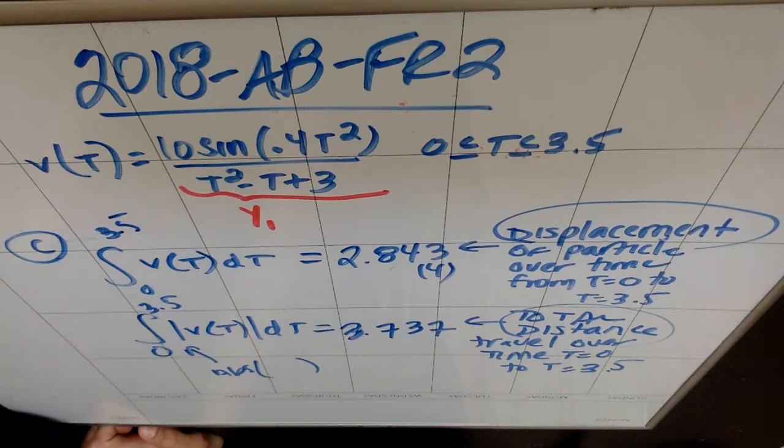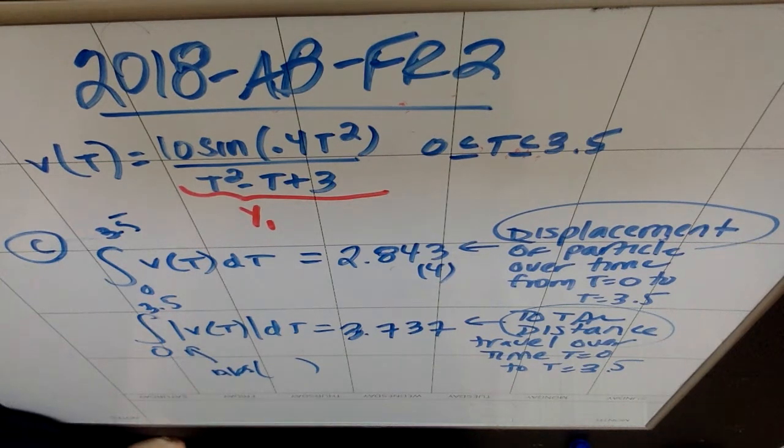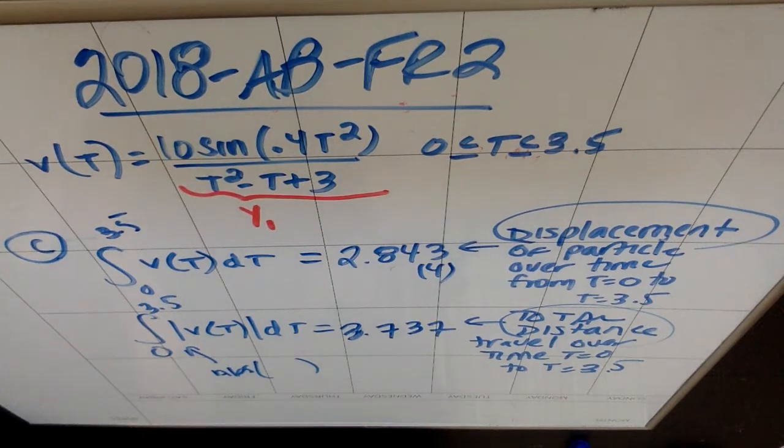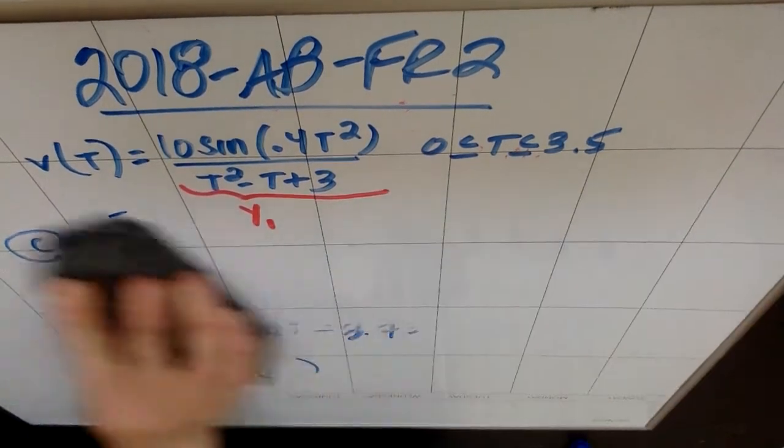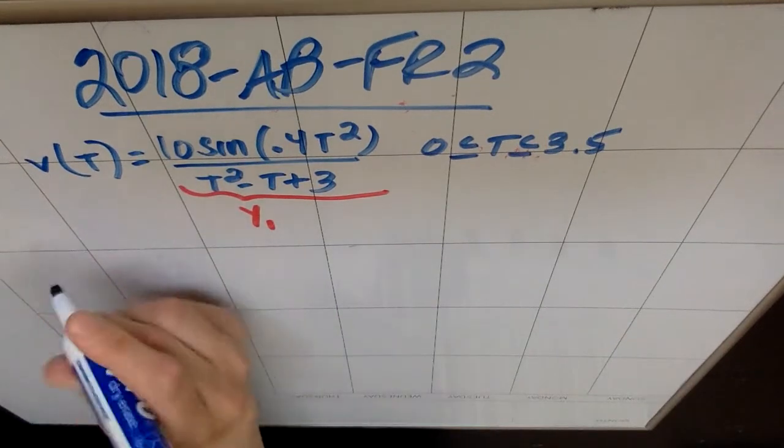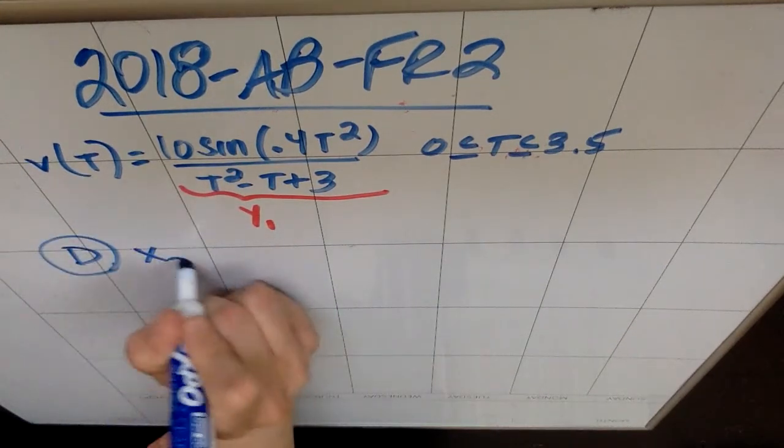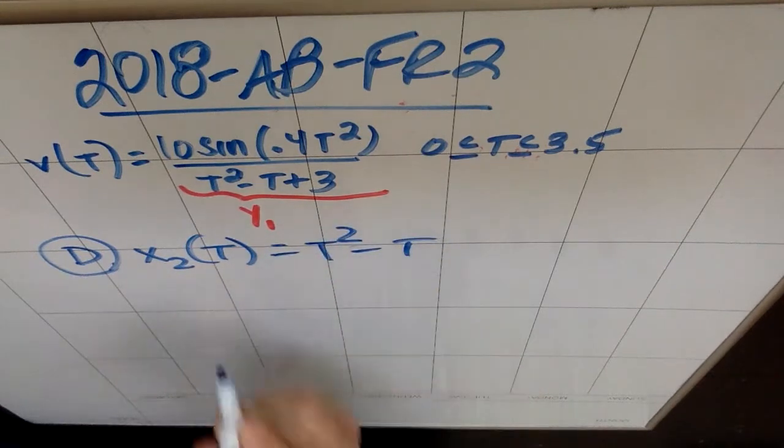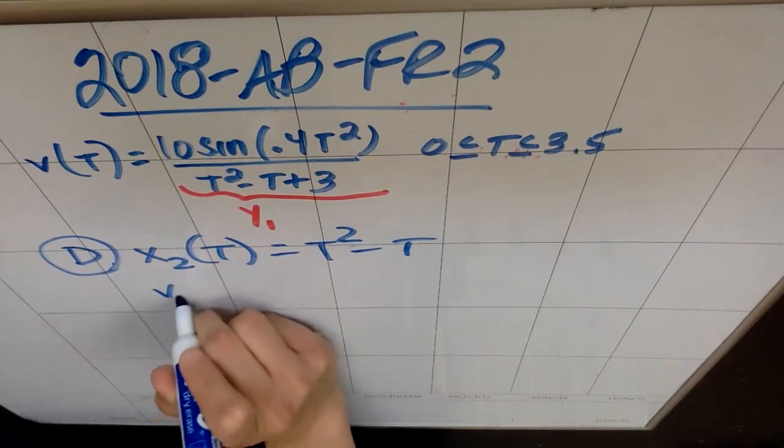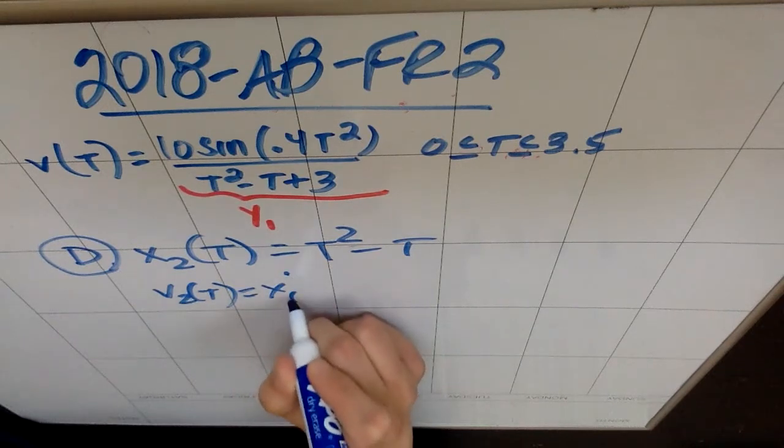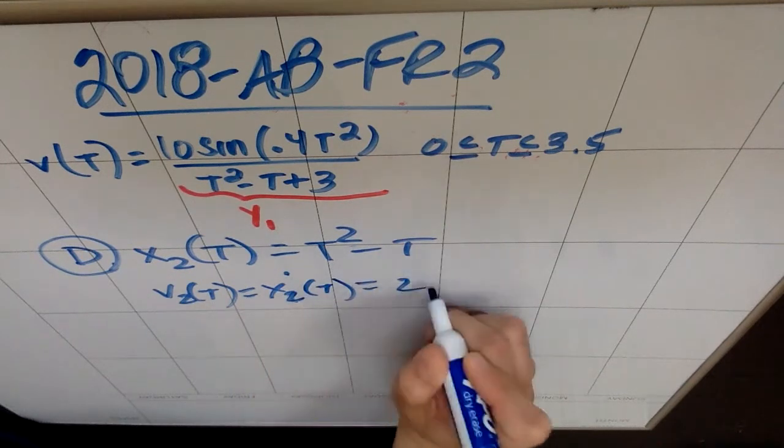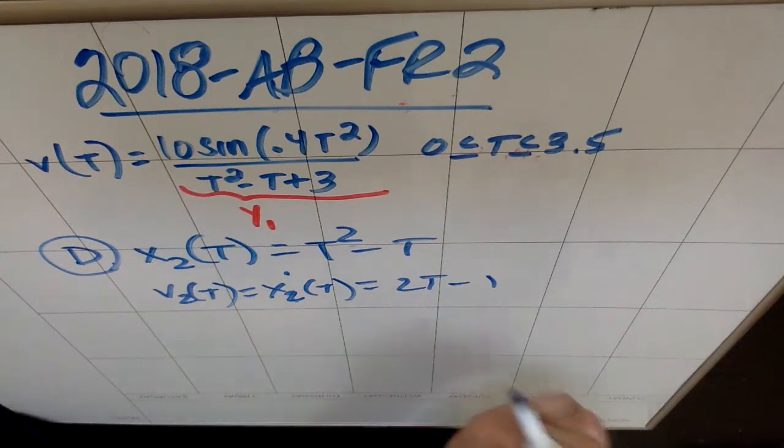Part D. A second particle moves along the x-axis with the position that is given by x sub 2 of t equals t squared minus t from 0 to 3.5. At what time t are the two particles moving with the same velocity? What they're really asking here, they gave you in Part D, they gave you this x2 of t to be t squared minus t. So if you wanted v2 of t, it would just be x prime 2 of t. So that would be 2t minus 1. Really, what they're asking you is, when is this equal to this?